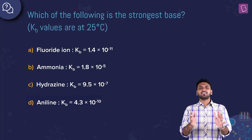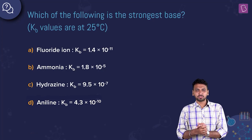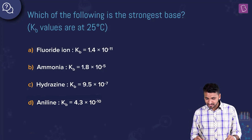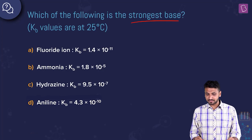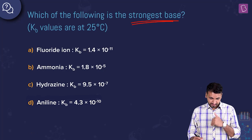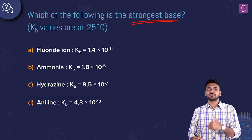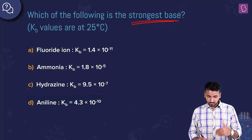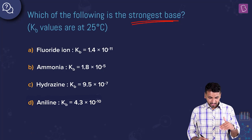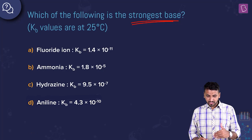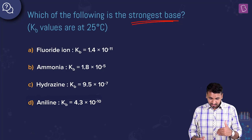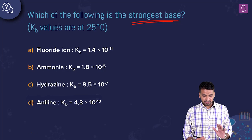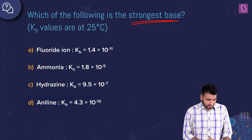Here we have a question: which of the following is the strongest base? Kb values at 25 degrees C are given for fluoride ion: Kb is 1.4 × 10⁻¹¹; ammonia: Kb is 1.8 × 10⁻⁵; hydrazine: Kb is 9.5 × 10⁻⁷; and aniline: Kb is 4.3 × 10⁻¹⁰.